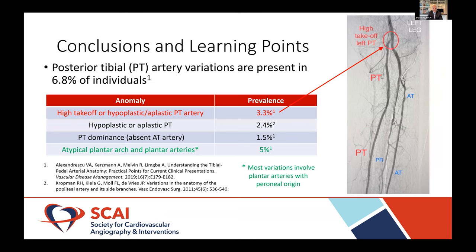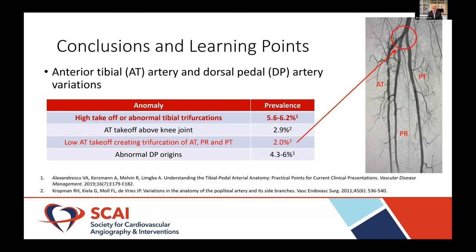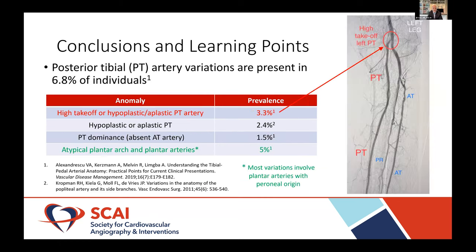You can see on the bottom line the abnormal DP origins — this is what we dealt with in this case, and most of those come off the peroneal. As far as posterior tibial anomalies, about 6.8% of patients have these. This is an example of a high takeoff of the posterior tibial artery. When you combine that with the hypoplastic, it's about 3.3%, so a true high takeoff of the PT is about 1% of the population. You can see atypical plantar arch and plantar arteries — most of these variations arise from the peroneal. I got all three of these example pictures within one week of putting this slide deck together, which underscores how common these are.